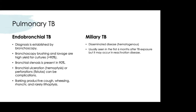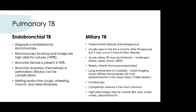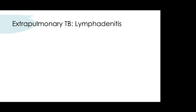Miliary TB is a disseminated form spread through the bloodstream, seen within the first 6 months after TB exposure but can occur in reactivation. Acute miliary TB can be fulminant, affecting multiple organs and leading to septic shock and ARDS. Seen in the elderly, very young, and immunocompromised, chest imaging shows diffuse micronodules predominantly in lower lobes, resembling millet seeds. High-yield biopsy sites include bone marrow, liver, lymph nodes, and pleura.